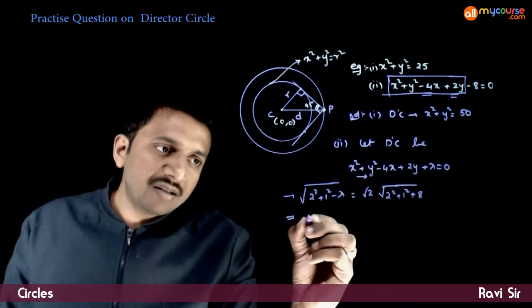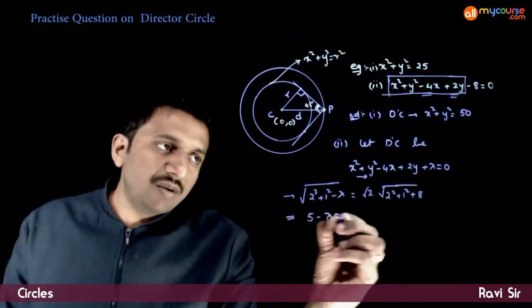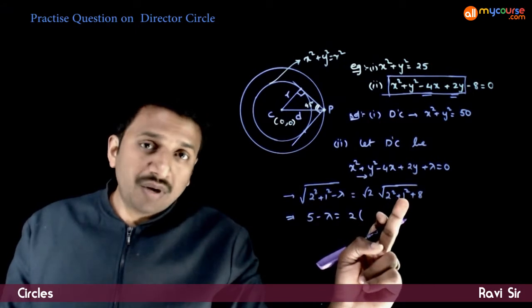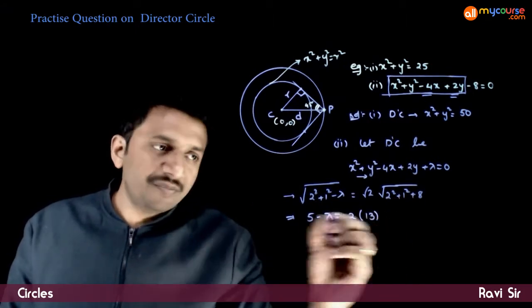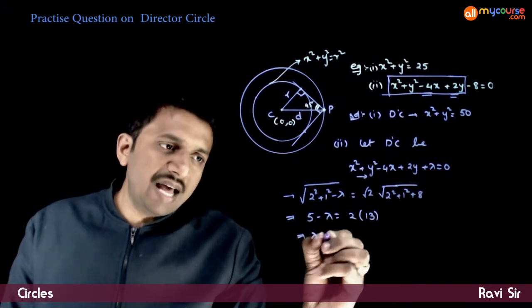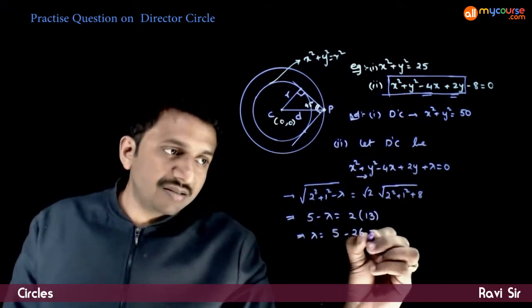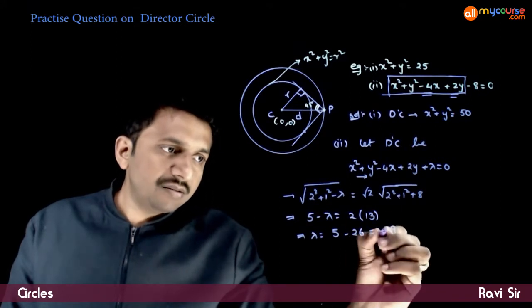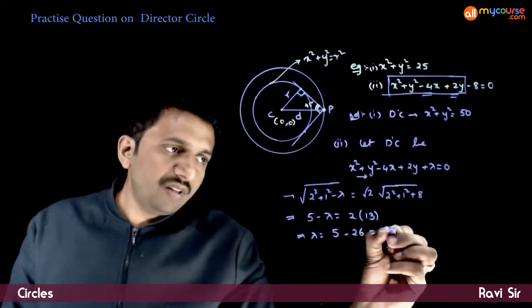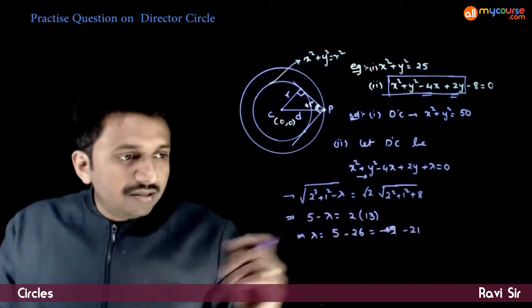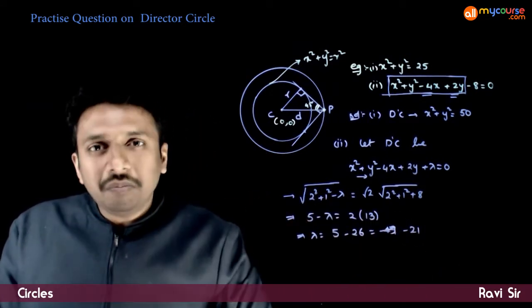Squaring on both sides, 5 minus lambda is equal to 2 times, 4 plus 1, 5 plus 8 is 13. This implies lambda has to be equal to 5 minus 26, which is minus 21. So, lambda has to be equal to minus 21.